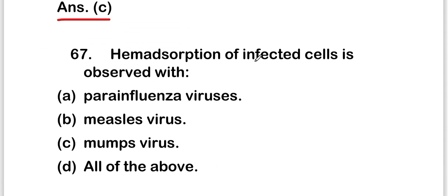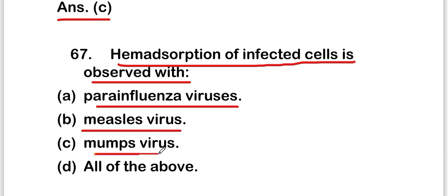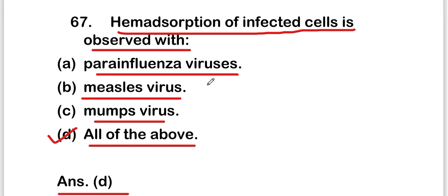The next question is: hemadsorption of infected cells is observed with para-influenza viruses, measles virus, mumps virus, or all of the above. The right answer is option D — all of the above. Hemadsorption of infected cells is observed with all of these viruses.